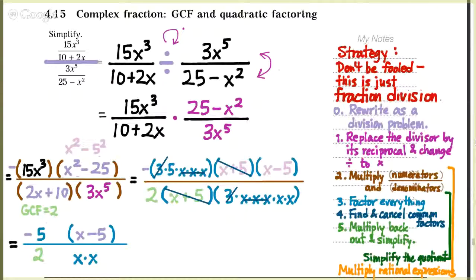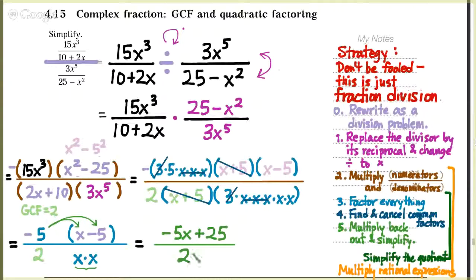We've done all the canceling we can do. So now we're just going to multiply back out and simplify. Negative 5 times the quantity x minus 5 gives me negative 5x plus 25. And downstairs, 2 times x times x gives 2x squared.